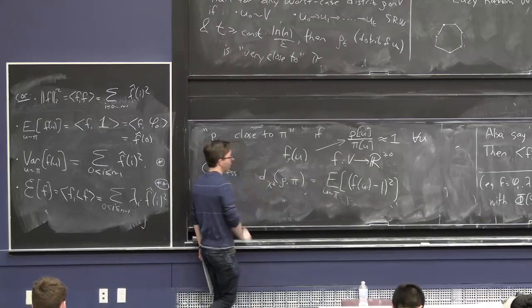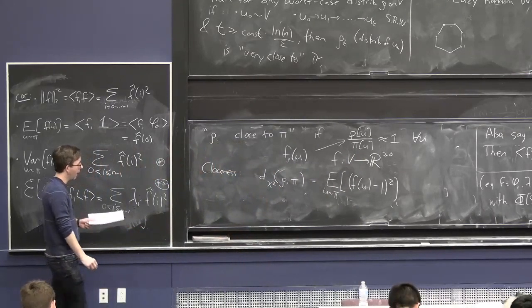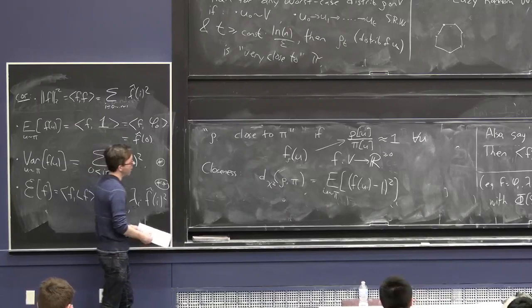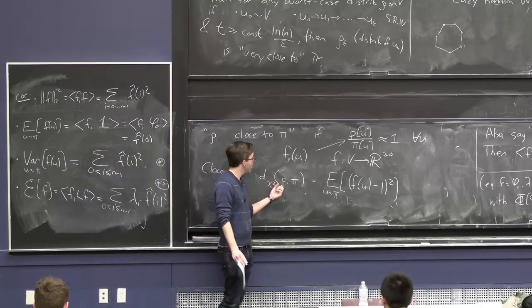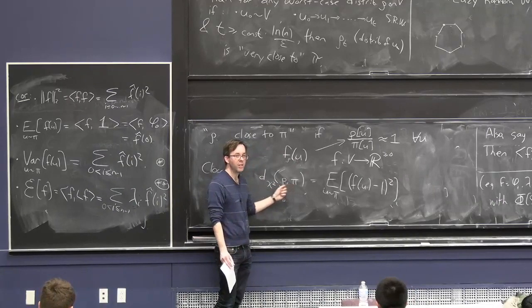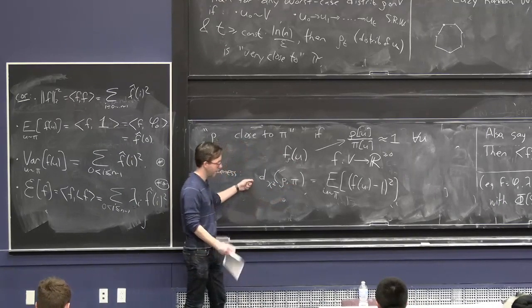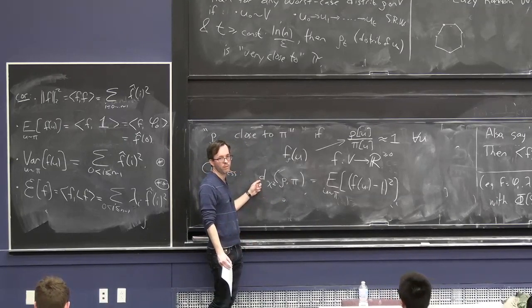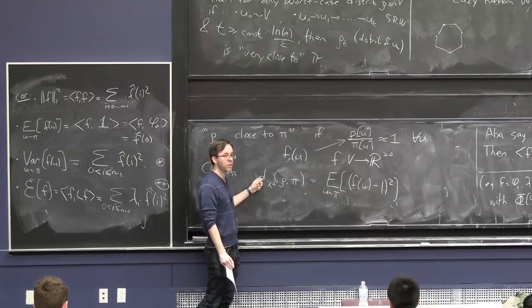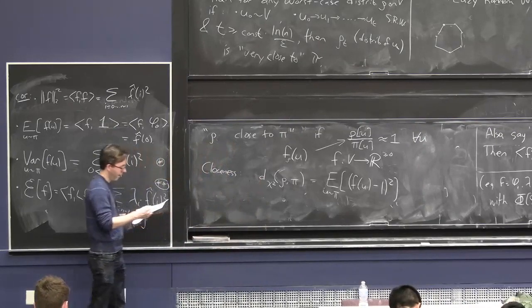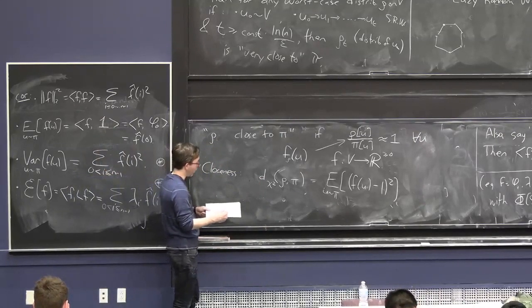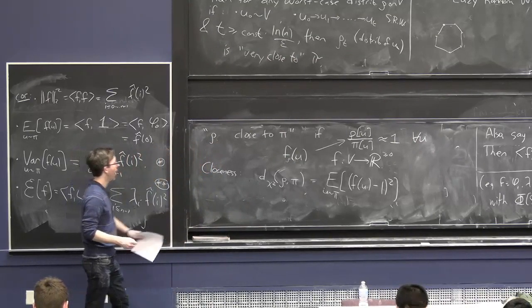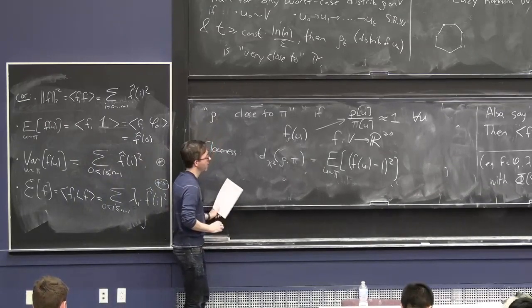This distance is 0 if and only if f(u) is always 1, which is if and only if rho equals pi. This distance has a name: it's called the chi-squared divergence or chi-squared distance between rho and pi. If you prefer total variation distance, you should prove as an exercise that the total variation distance is at most the square root of this chi-squared distance. You can also relate this to KL divergence and other measures of closeness.